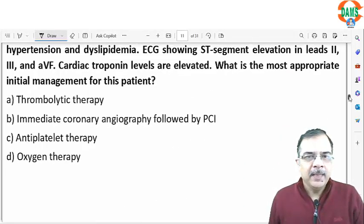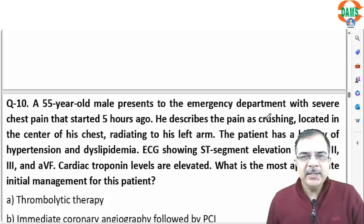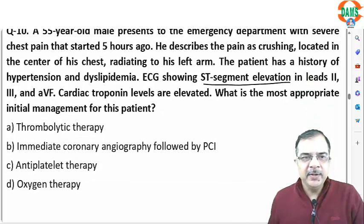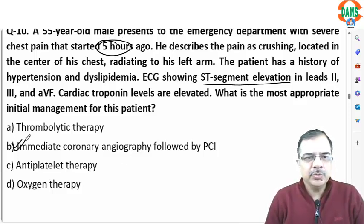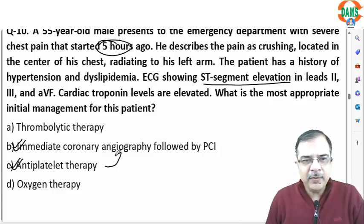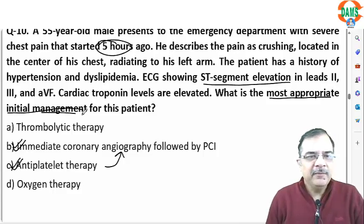Question 10: a 55-year-old patient presents to the emergency with severe crushing chest pain radiating to the left arm, history of hypertension and dyslipidemia, ST elevation on ECG, and elevated cardiac troponin — this is myocardial infarction. The patient presented within 5 hours, so the best treatment is immediate coronary angiography followed by PCI. However, the most appropriate initial management is antiplatelet therapy. Answer is option C followed by option B.